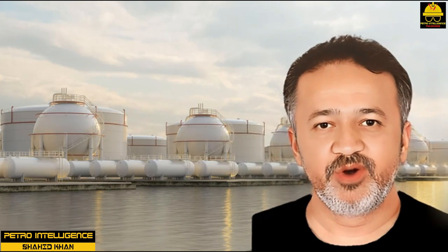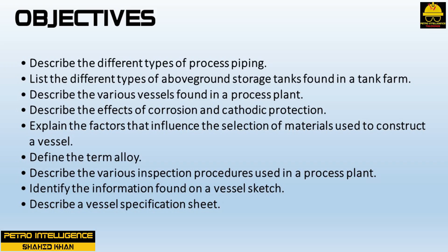After completing this course you will be able to describe the different types of process piping, list the different types of above-ground storage tanks found in a tank farm, describe the various vessels found in a process plant, describe the effects of corrosion and cathodic protection, explain the factors that influence material selection for vessel construction, define the term alloy, describe various inspection procedures, identify information found on a vessel sketch, and describe a vessel specification sheet.